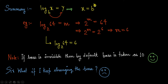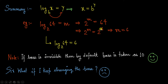Let's see an example. If log 64 to the base 2 equals m, then from here we can write 2 to the power m equals 64, which is 2 to the power of 6. Since the base is the same, the powers must be equal, so m equals 6. Therefore log 64 to the base 2 equals 6.